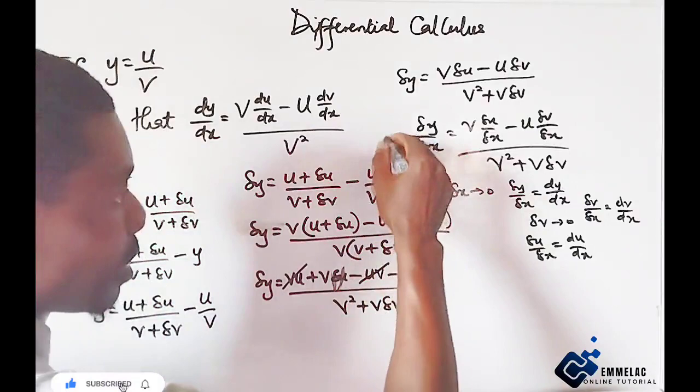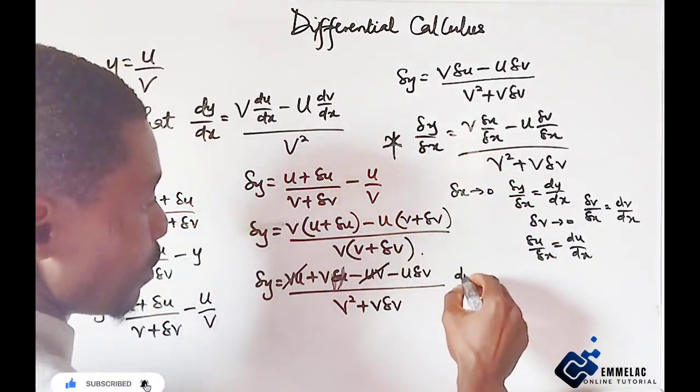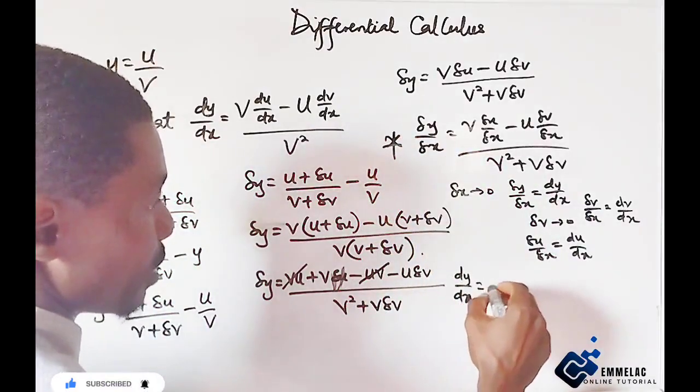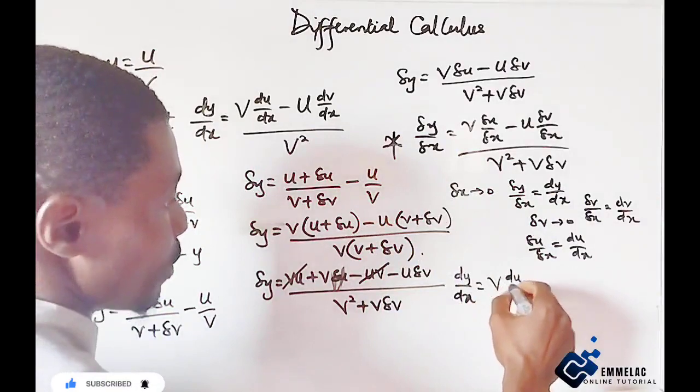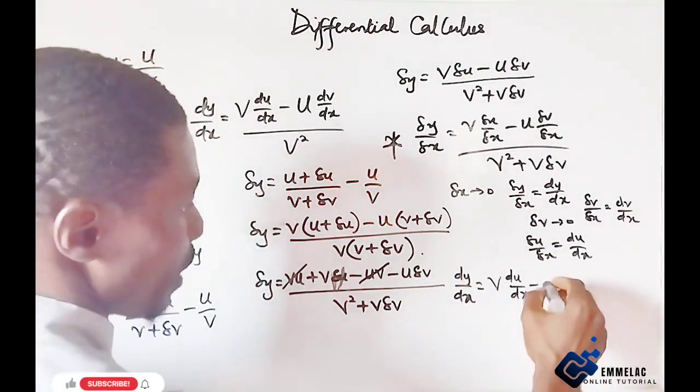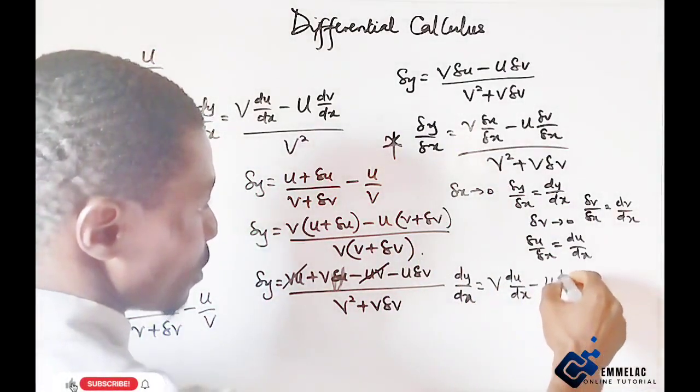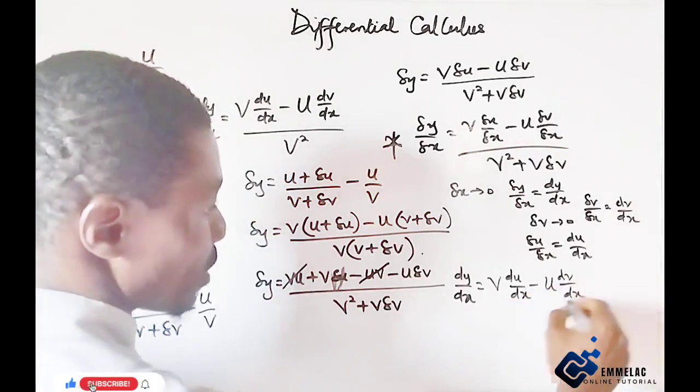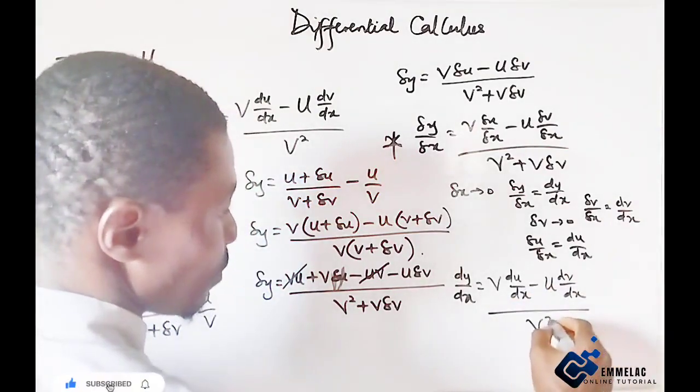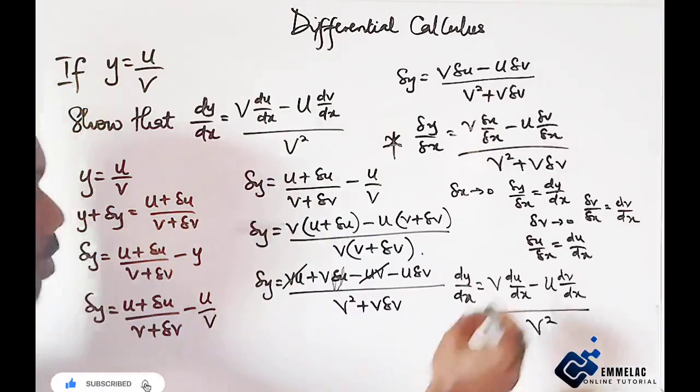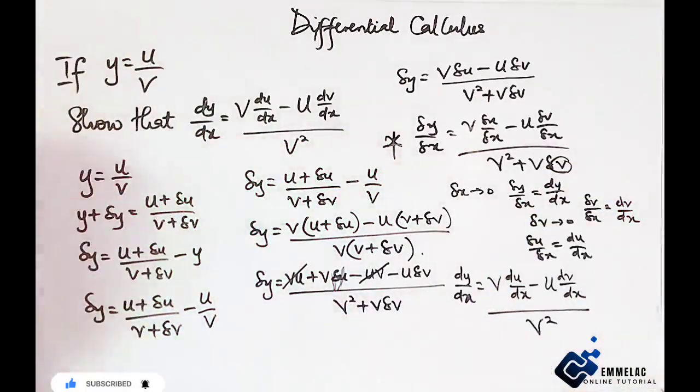So definitely this equation becomes dy over dx equals to v·du/dx minus u·dv/dx all over v to the power of 2, because here the dv becomes zero.